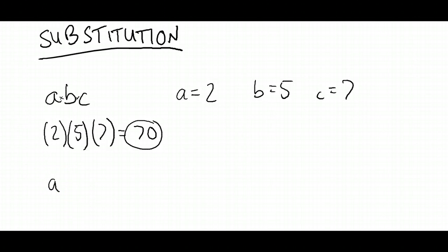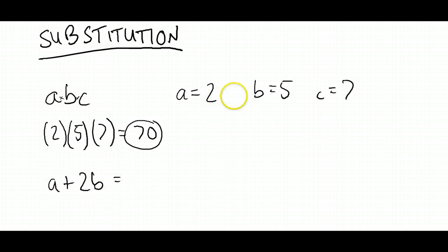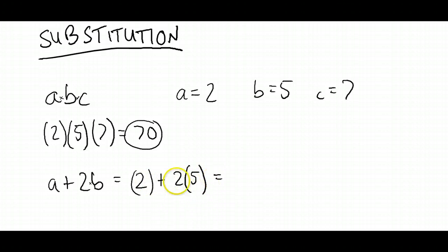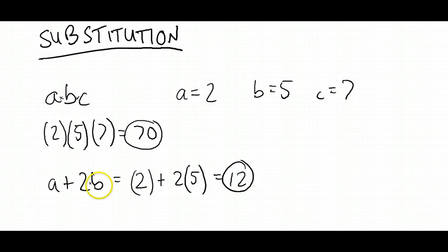Let's look at another example. If we had A plus 2B as our expression and we want to know what that actually equals, given that A=2, B=5, C=7, then we just substitute the values into the expression. So A becomes 2, we keep our plus sign, and then we've got 2 times B, putting B inside some brackets, and B is actually 5. So we've got 2 plus 2 times 5. 2 times 5 is 10, plus 2 is 12.